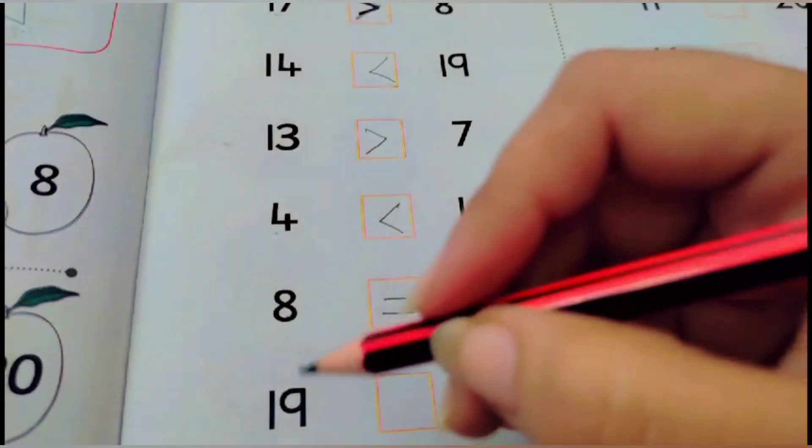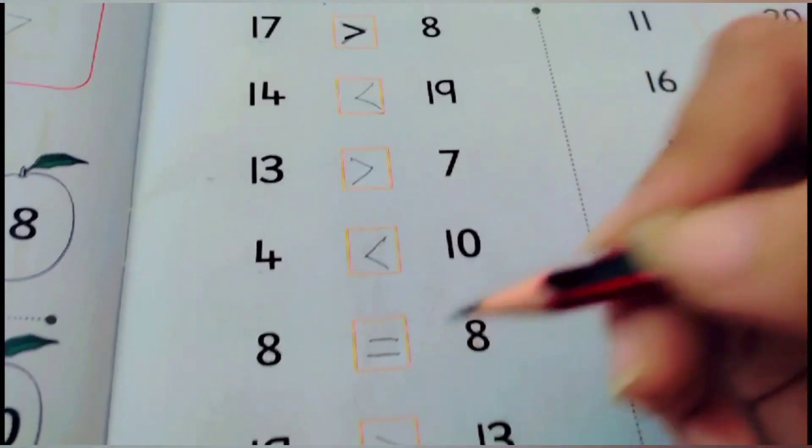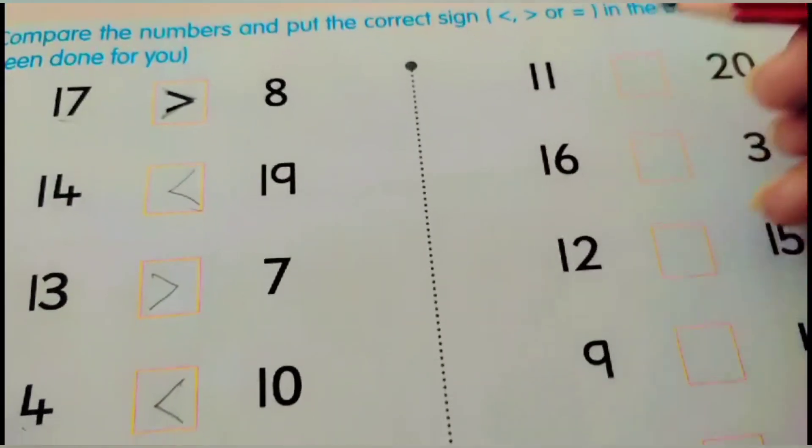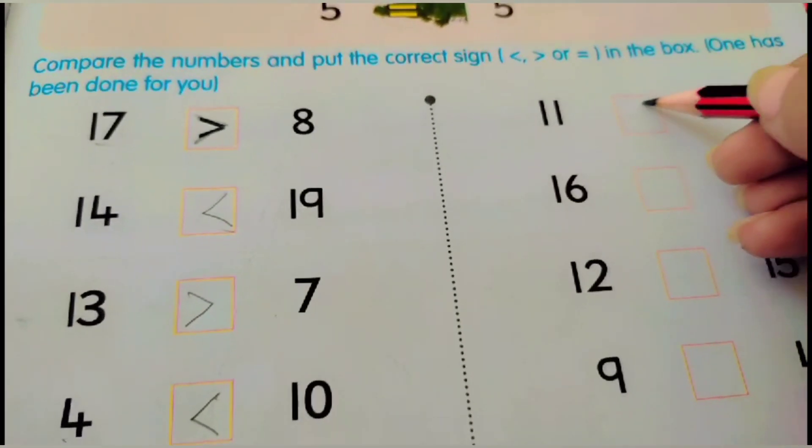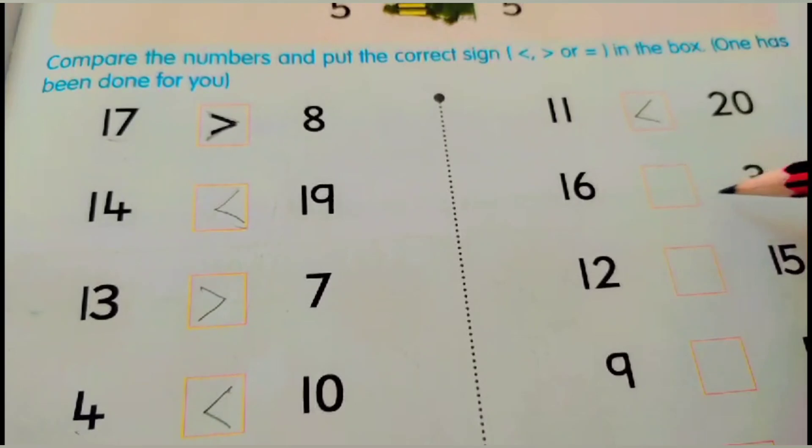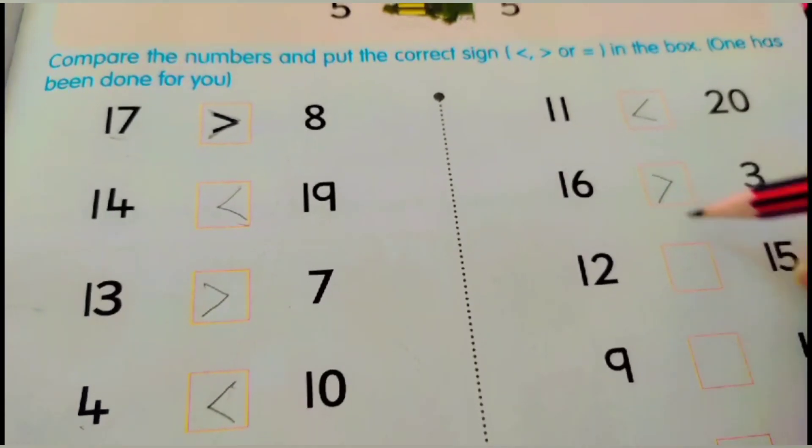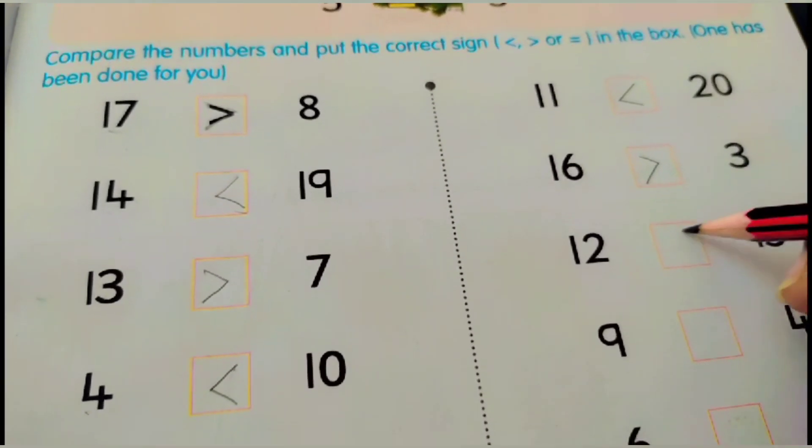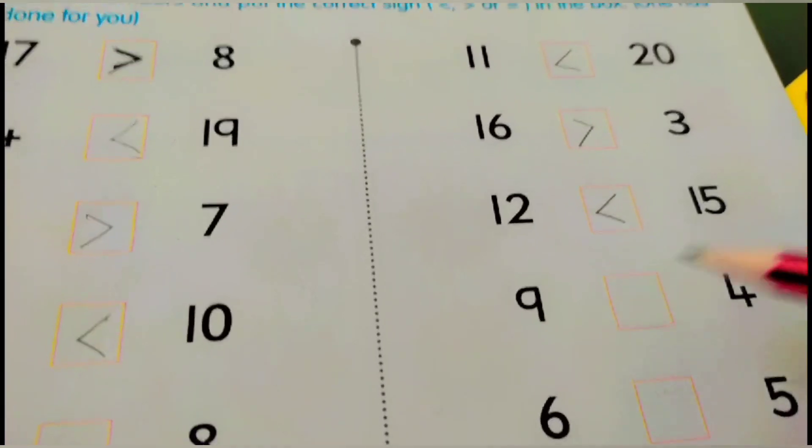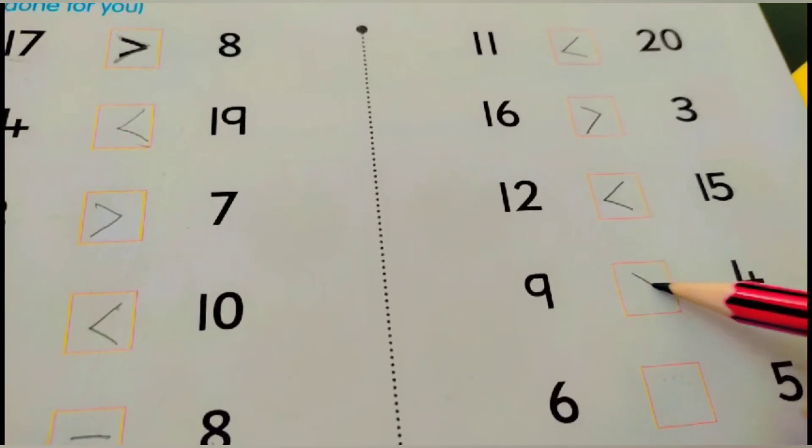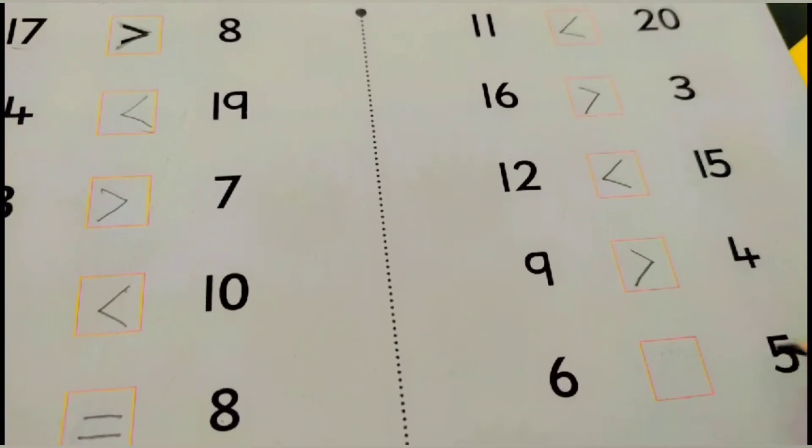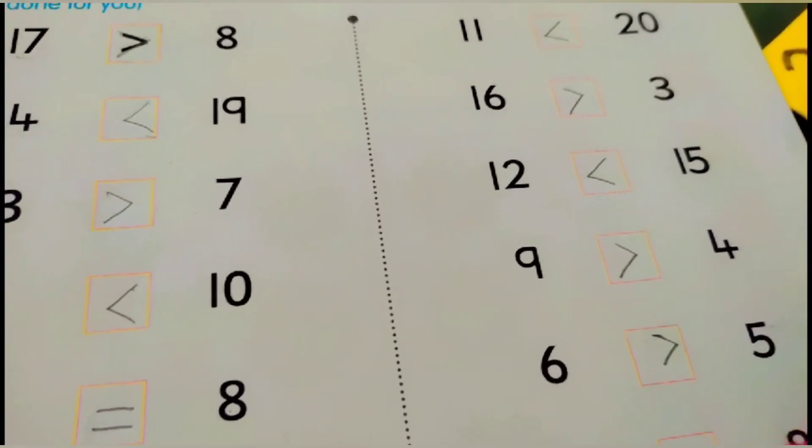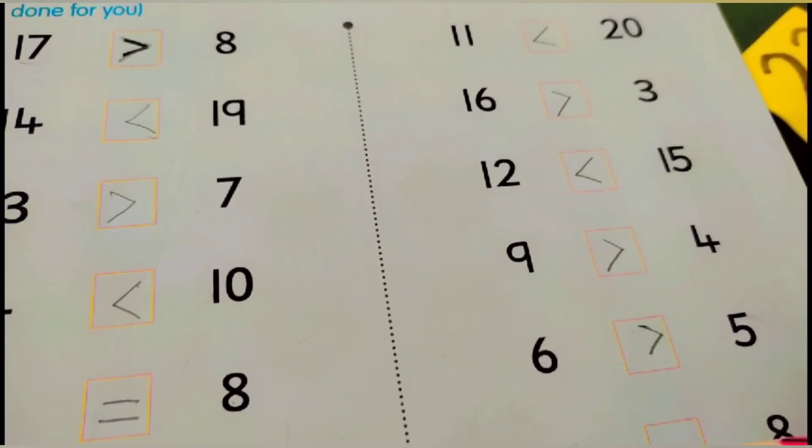19, 13. Which one is bigger? 19. Next, we have 11, 20. 20 is bigger. 16, 3, 15 is bigger. 12, 15, 15 is bigger. Next, we have 9, 4. 9 is bigger. 6, 5. 6 is bigger. 18, 8. 18 is bigger.